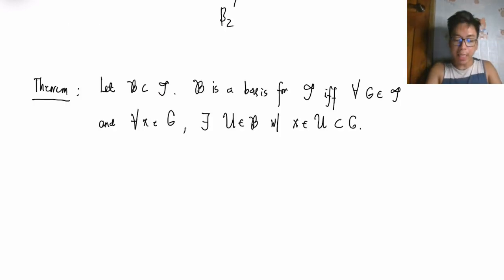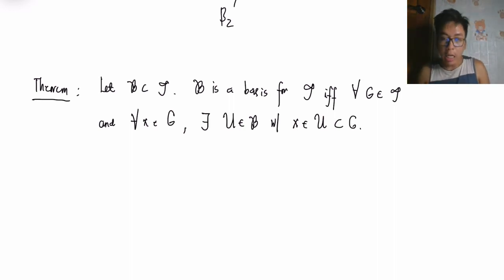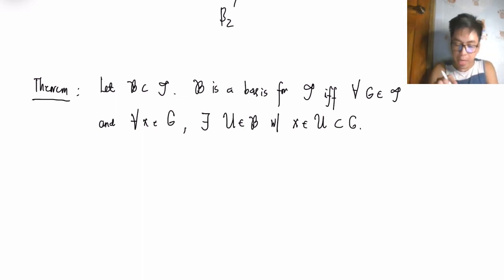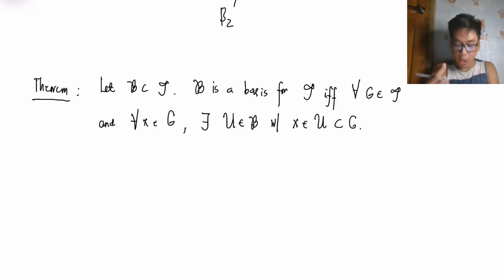Before ending, we state a theorem that generalizes what a basis is. The theorem: if script B is contained in tau, then script B is a basis for tau if and only if for every G in tau and for every x in G, there exists U in script B with x ∈ U and U ⊆ G.